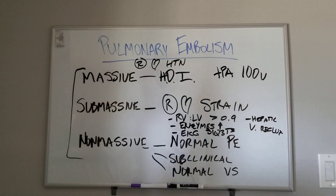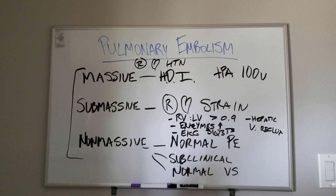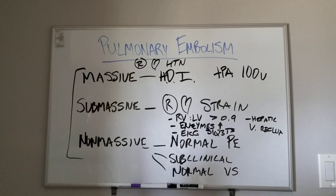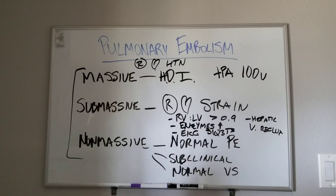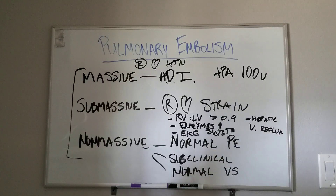So massive is easy — you're trying to keep the person alive. Non-massive is easy — you just need to anticoagulate them. And submassive, you really have to think about treating them to prevent right heart strain leading to right heart failure and right heart hypertension. That is PEs and their three types in a nutshell.